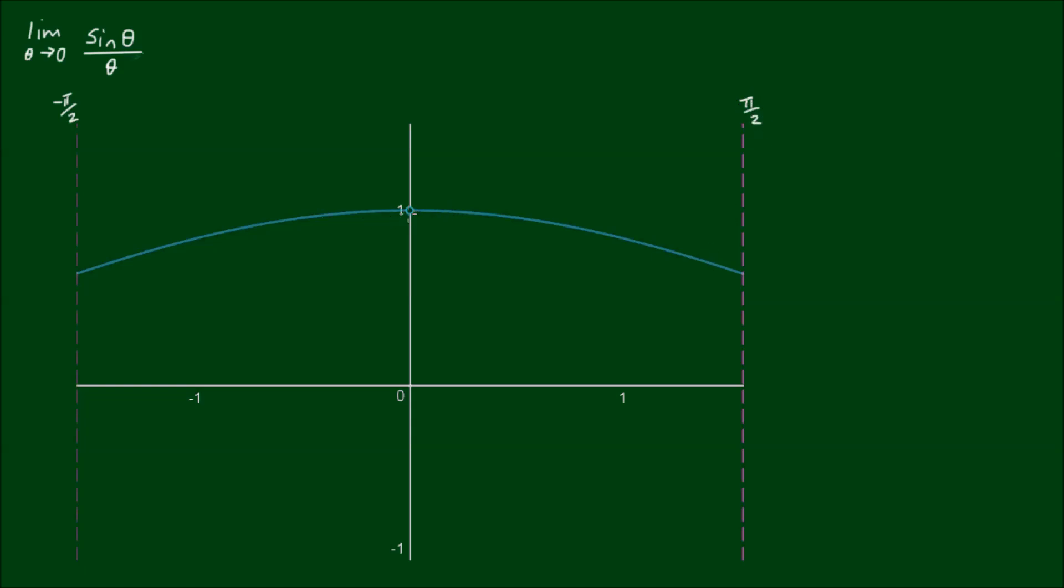And as you can see here as we approach the y-axis or theta equals zero the function is undefined because we cannot divide by zero. But visually you could see that as we approach the value theta equals zero from both the right and the left, so from the positive side and the negative side, even though the value of this function is not defined at theta equals zero, we still approach the limit L equals one.